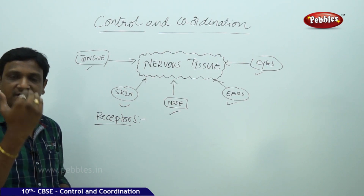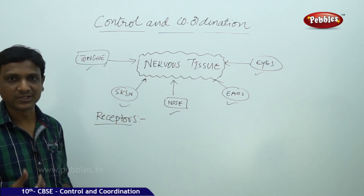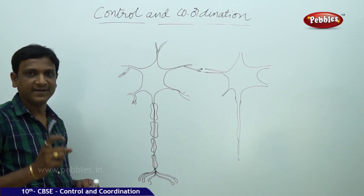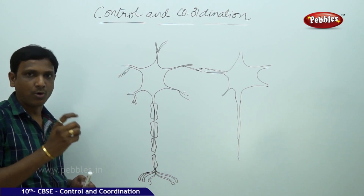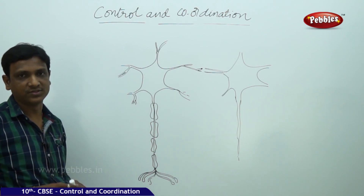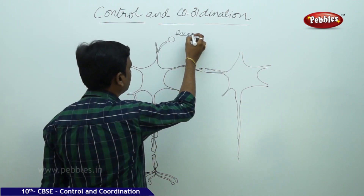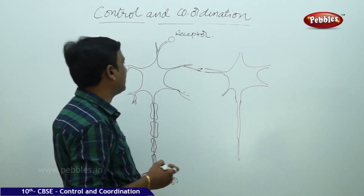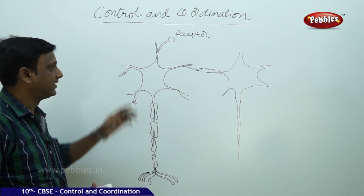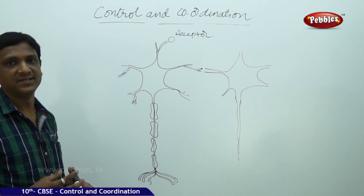Let us see what are the various divisions or parts of the nervous system and how this control and coordination is brought about. A receptor is a specialized part of the dendritic tip of a nerve cell. The nervous system is made up of specialized cells called nerve cells. Our body is made up of various organs, and each organ is made up of specialized tissue.